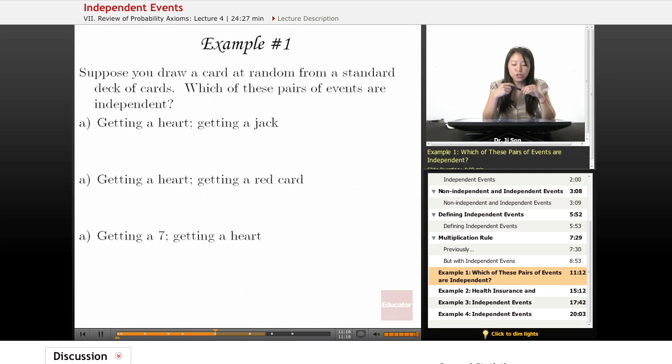Here's example one. Suppose you draw a card at random from a standard deck of cards. Which of these pairs of events are independent? Remember, you're just drawing one card. Just because they say events doesn't mean you're drawing two cards. It just means it's two different aspects of that card, like heart and jack.